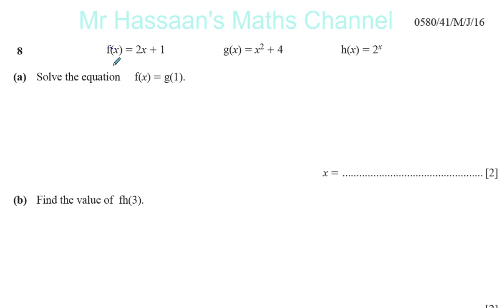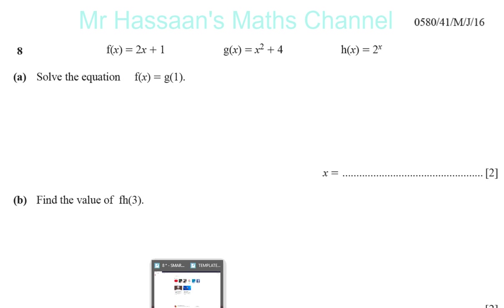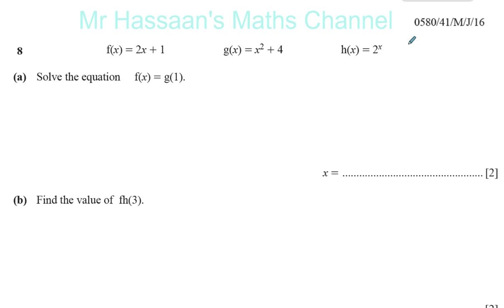We are told there are three functions: f(x) equals 2x plus 1, g(x) equals x squared plus 4, and h(x) equals 2 to the power of x. There are three functions that we've been given, and we have to do the following. First of all, it says solve the function f(x) equals g(1). So what does this mean? It means we have to make an equation.